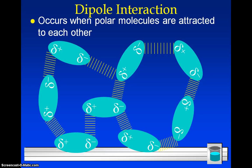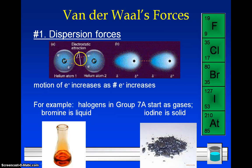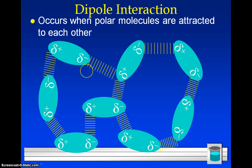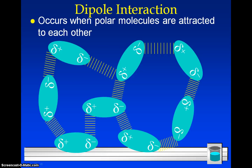A dipole interaction is when we have a polar molecule — something that's got a positive and negative end. Remember that the dispersion force polarity is a very temporary, weak polarity, but this is a permanent polarity. We've looked at how to identify whether or not a molecule is polar based on its Lewis structure and the symmetry of the electrons. And so when you have two polar molecules next to each other, they're going to interact and be attracted to one another — the positive end of one polar molecule will be attracted to the negative end of the polar molecule next to it. And so that is a dipole interaction, which is a little bit stronger than a dispersion force.